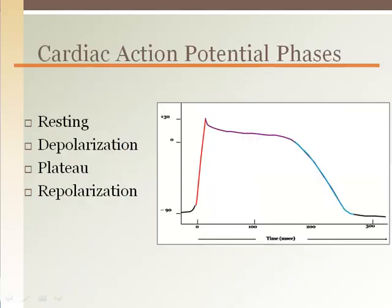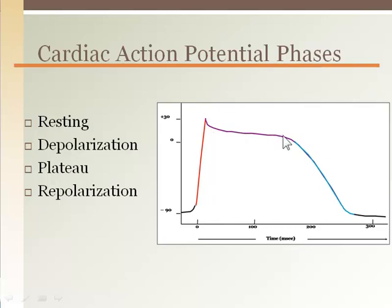Cardiac action potentials are similar to action potentials that occur in neurons, with the exception of this plateau. The rapid depolarization is similar, but instead of immediately repolarizing to baseline, the cardiac cell maintains the positive membrane potential for almost 200 milliseconds.